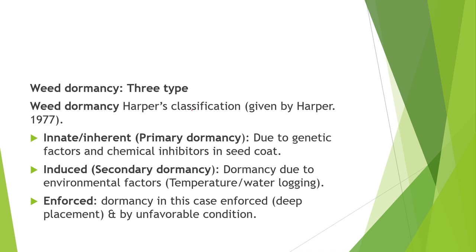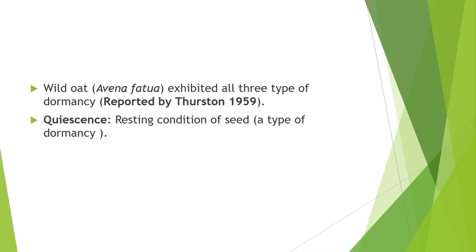Next topic is weed dormancy. The weed dormancy term and classification was given in 1977. Weed dormancy is classified into three types: innate, induced, and enforced. Innate or inherent dormancy is genetically induced with some chemical inhibitors — also called primary dormancy. Induced dormancy means seeds germinate after dormancy is induced due to temperature and waterlogging conditions. Enforced dormancy is enforced by unfavorable conditions, such as deep placement of seeds. Wild oat, Avena fatua, exhibits all three types of dormancy.